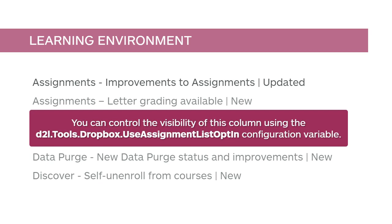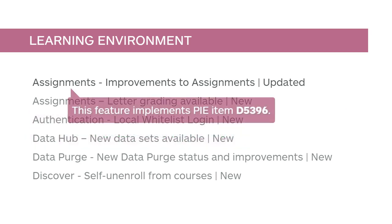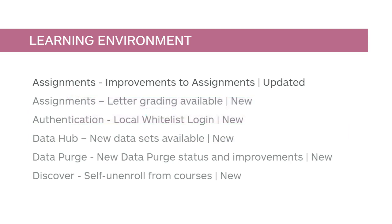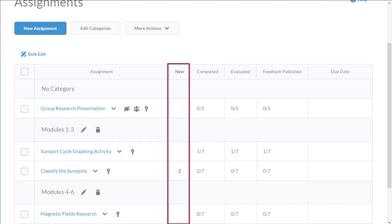Use Assignment List Optin and Configuration Variable. This feature implements PIE item D5396. A new column will now identify new and resubmitted assignments.